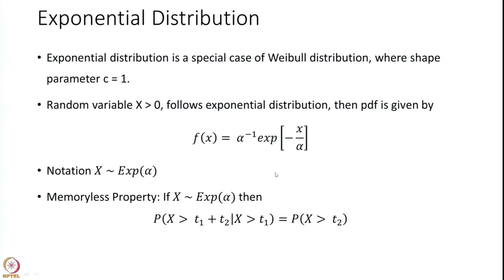Also please note that before going further to the memoryless property, you can have a 2-parameter exponential distribution. Here you have only 1 parameter which is alpha. You can introduce a psi which is greater than 0, and say that x greater than psi follows a 2-parameter exponential distribution, where you replace x by x minus psi. Then x is distributed as exponential(psi, alpha).